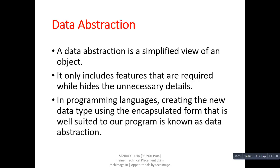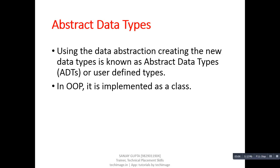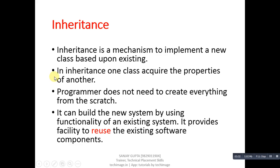The next feature is abstract data type. Using data abstraction to create a new data type is known as an abstract data type, or ADT — also called user-defined data types. In object-oriented programming, it is implemented as a class. So you can say that a class becomes an abstract data type after its implementation.